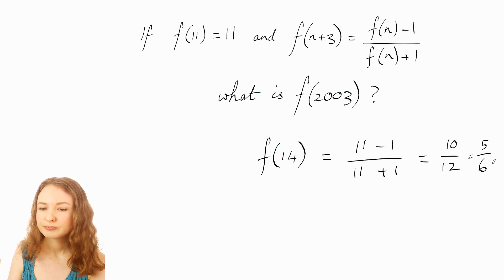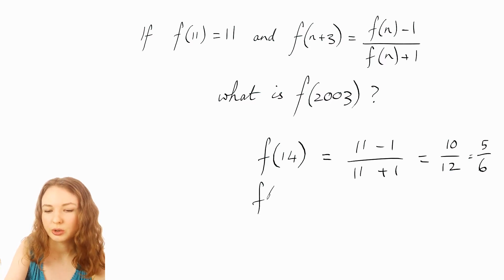Okay maybe we can try doing the next one. So we could do f of 17 would be the next one if you plug in n equals 14. So you've got f of 14 there which is the 5 over 6 that we just found.